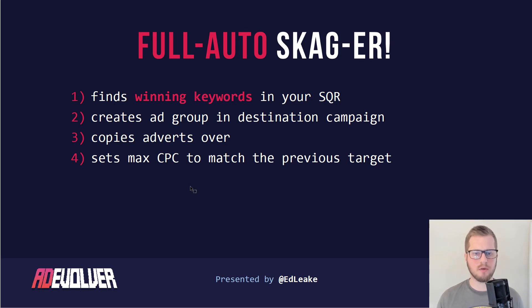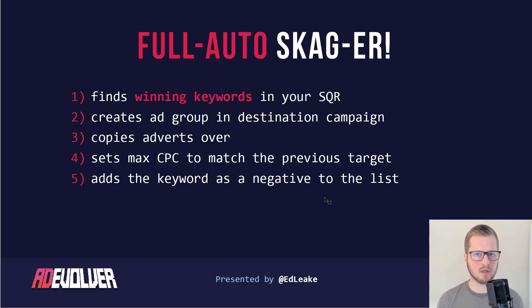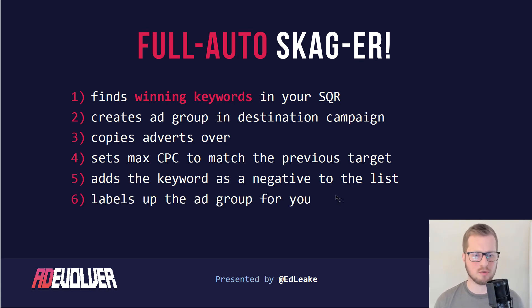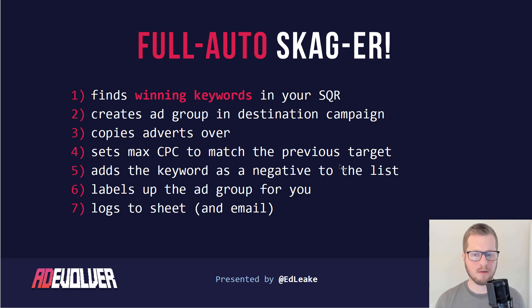It also sets the max CPC based on average performance — essentially, what was the average CPC to hit your target. Completely automated. It then adds the keyword to the shared negative keyword list, which you should apply to all non-exact campaigns — doing the cross-pollination management for you so your SCAGs don't trigger across your account. And it adds a label to the ad group for easy filtering and reporting, then logs everything to the sheet and can send you an email if you wish.